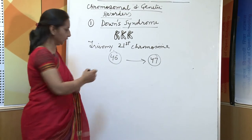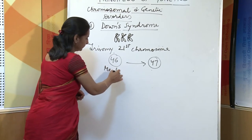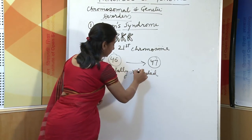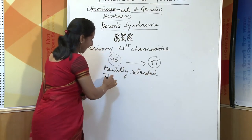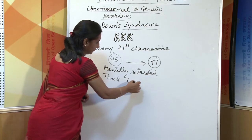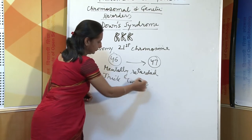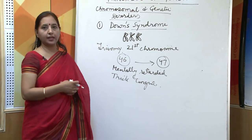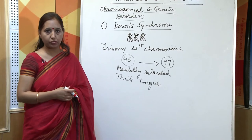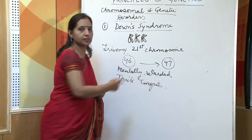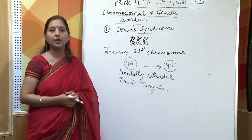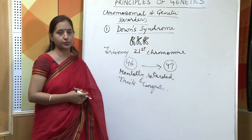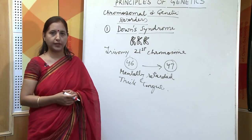This type of individual is mentally retarded and has a thick tongue. Mostly mothers above the age of 40 bear children having Down syndrome, where the number of chromosomes is increased to 47 instead of 46 due to the extra chromosome in the 21st pair.